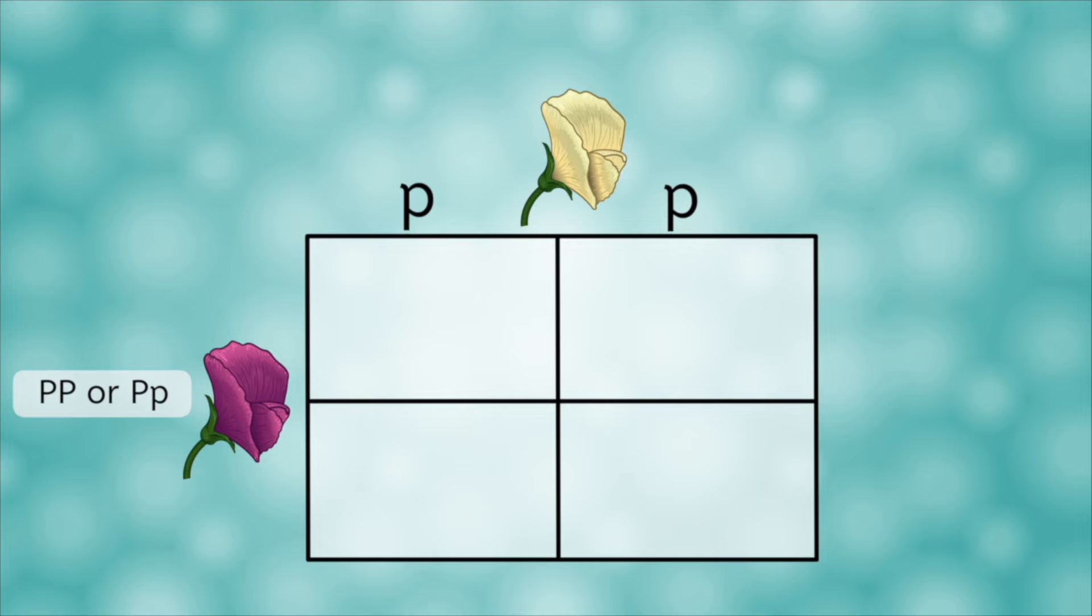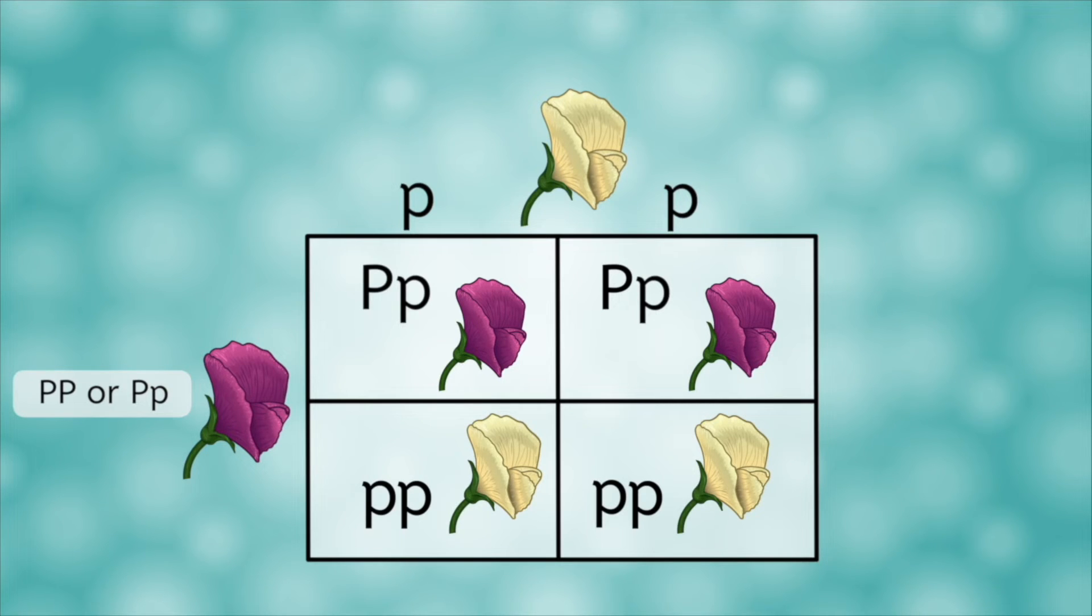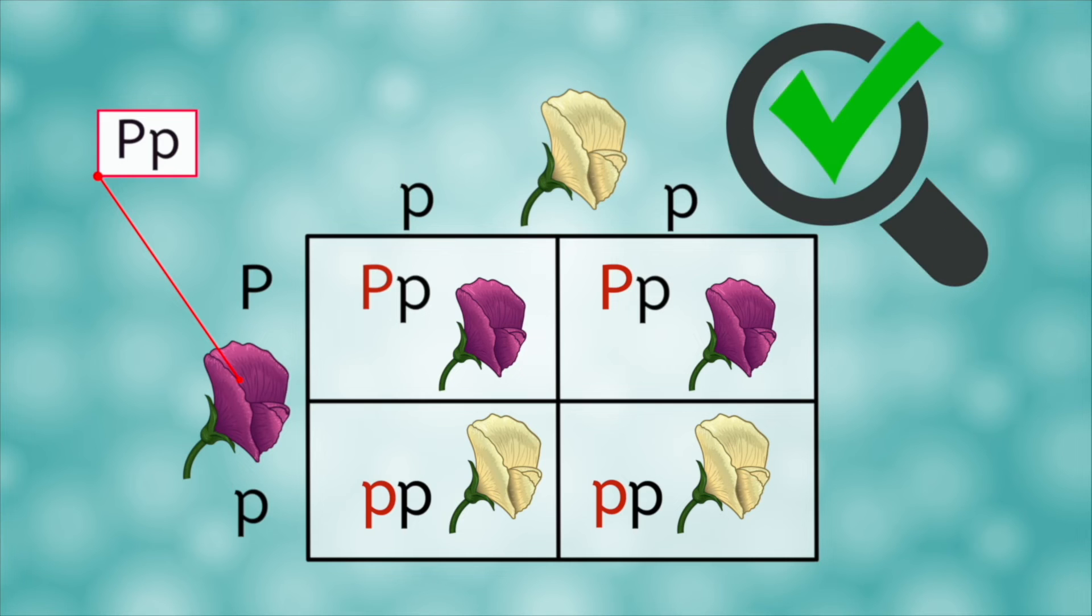We know that the white flowered parent would have given all of the offspring a little p, so we can go ahead and put one in each box. We also know that about half of our offspring were purple, so two of the four boxes must also have a big P. The other two were white, so they were little p, little p. What parental genotype on the left would have given us these results? The purple flowered parent must have been heterozygous, big P, little p. After all, had the purple parent been a big P, big P, all offspring would have gotten a big P and been purple. Mystery solved!